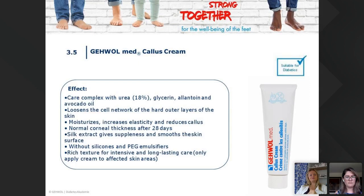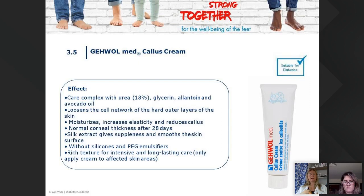Then the Gable Lipidro cream — one of the best in my establishment for home care. Clients always use it because I educate them about it. It's a care complex with 18% urea, glycerin, allantoin, and avocado oil. It loosens the cell network of the hard outer layers of the skin, moisturizes, increases flexibility, and reduces callus.